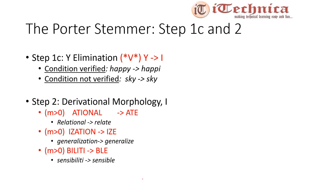Step 1c is the y-elimination step: if the stem of the word contains a vowel and ends in y, convert y to i. For example, happy — removing y leaves happ which contains a vowel, so it becomes happi. However, for sky — removing y leaves sk which contains no vowel, so the rule does not apply and sky remains sky.